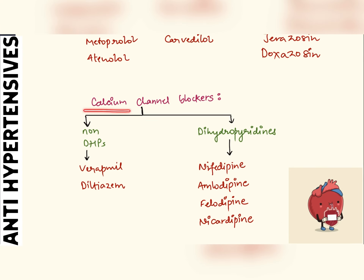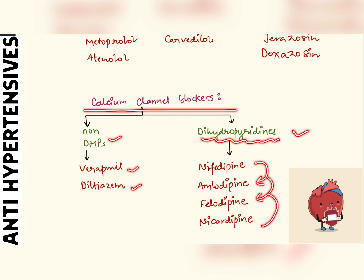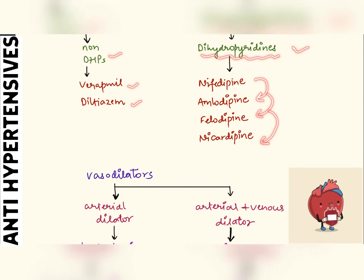We have calcium channel blockers, in which we have non-DHPs and DHPs — DHPs stand for dihydropyridines. Non-DHPs include verapamil and diltiazem. DHPs include nifedipine, amlodipine, felodipine, and nicardipine.